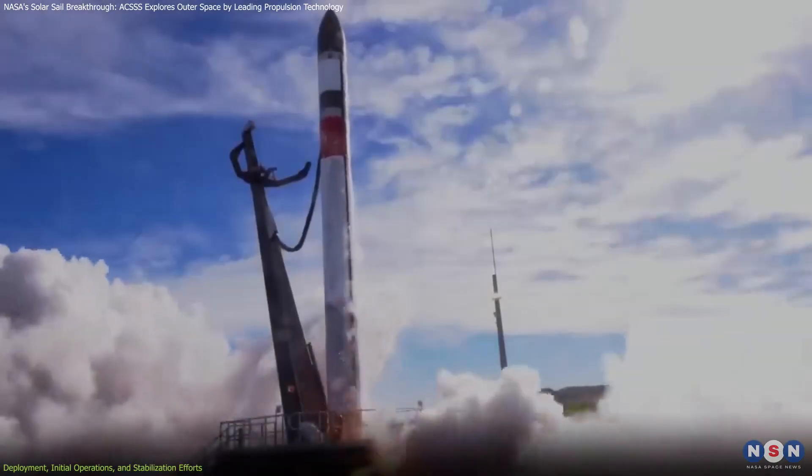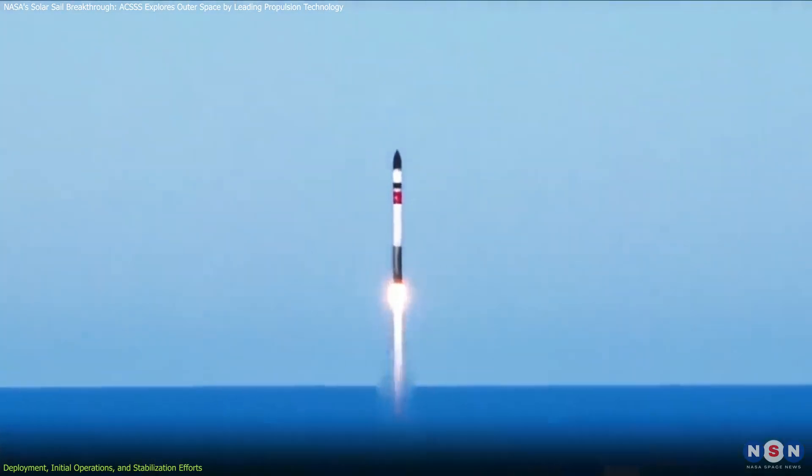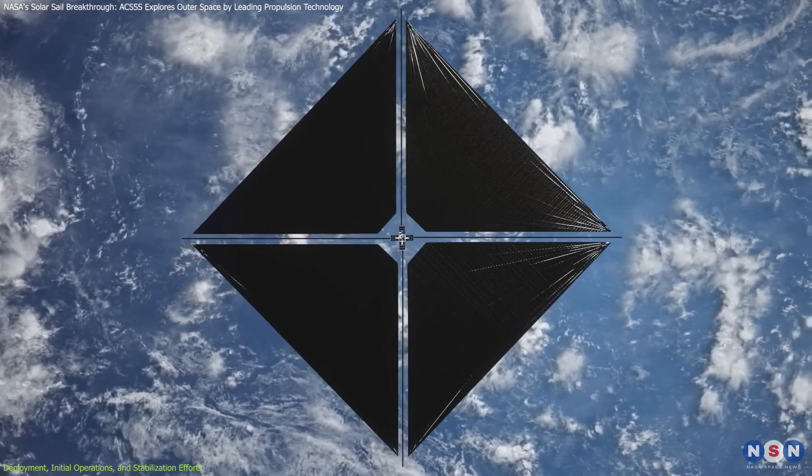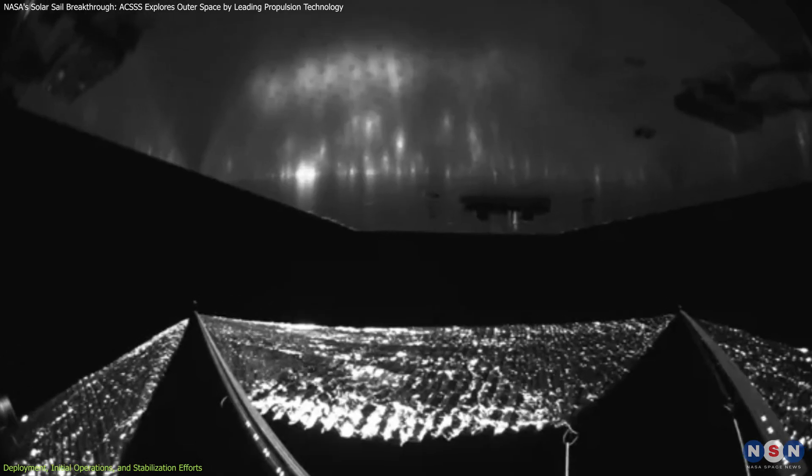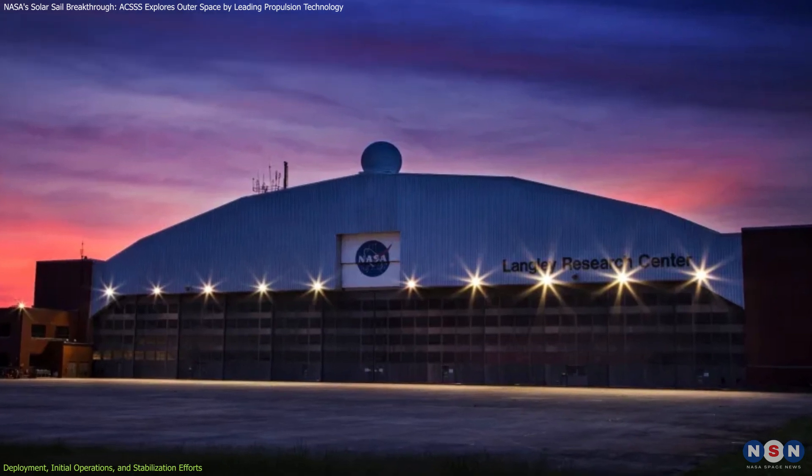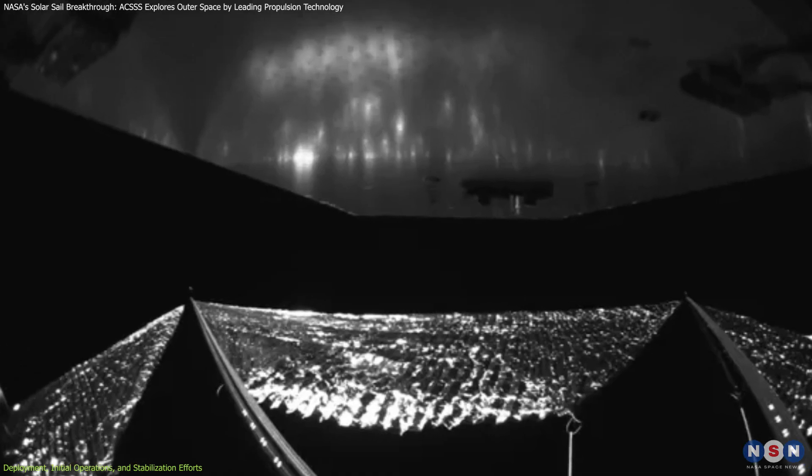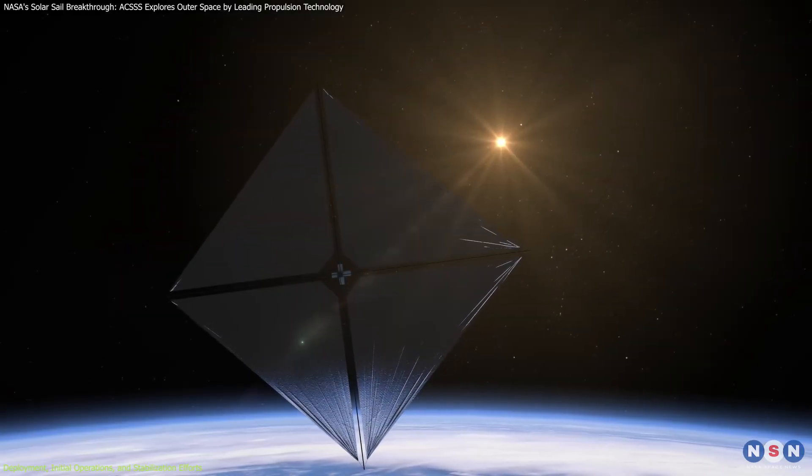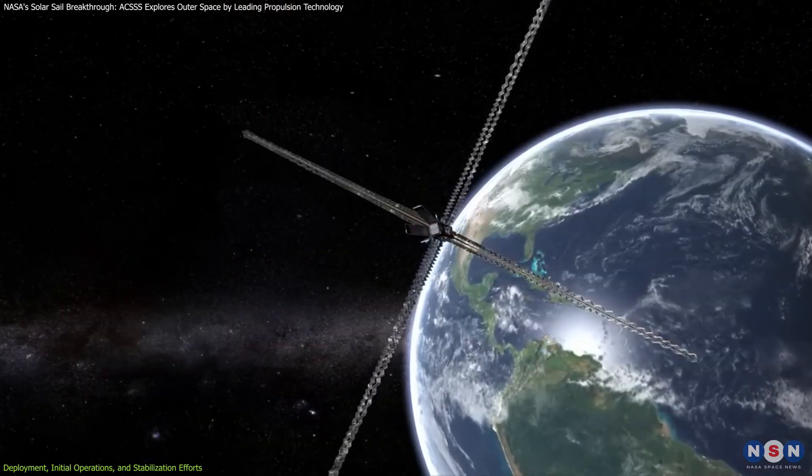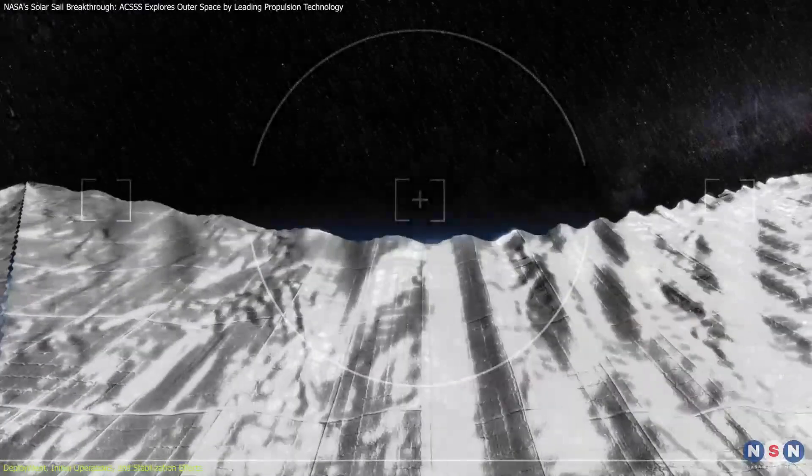The ACSSS was launched in April 2024 aboard a Rocket Lab Electron rocket and has since been orbiting the Earth at an altitude of 500 to 600 kilometers. After its release, the spacecraft was observed to be slowly tumbling, a condition expected by NASA's Langley Research Center as part of the testing process. The tumbling allowed engineers to characterize how the sail and booms behave under different forces and conditions. The primary objective was to deploy the sail without any attitude control and then stabilize it using the solar sail itself.